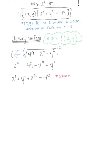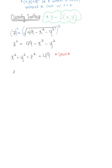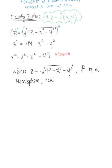But we want to keep in mind that that's not the original function we started with. So we can say that therefore, since z equals positive square root of 49 minus x² minus y², our function F is a hemisphere or the upper half of a sphere centered at the origin with a radius of 7.